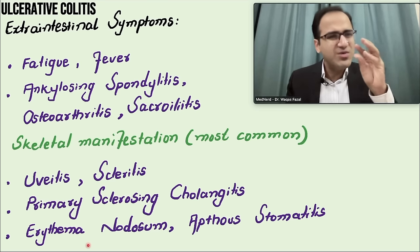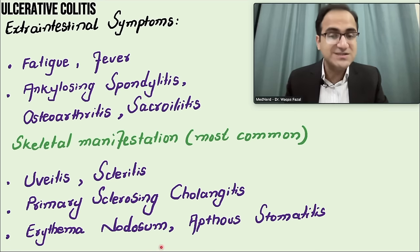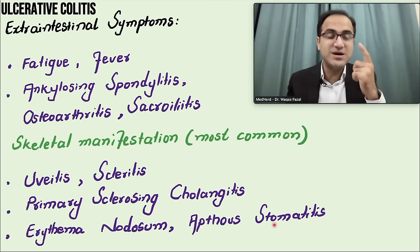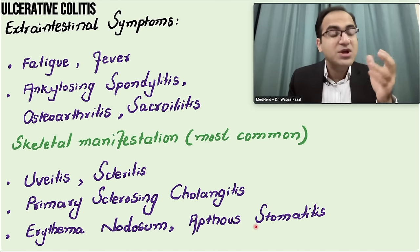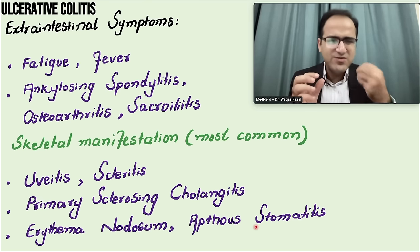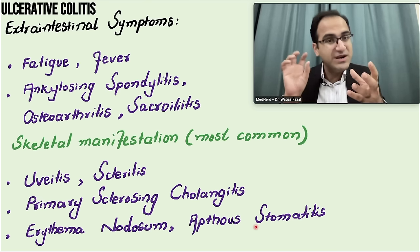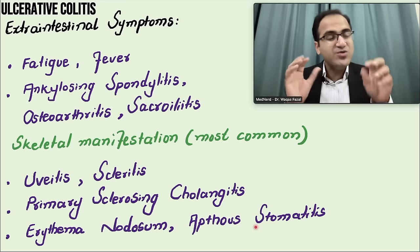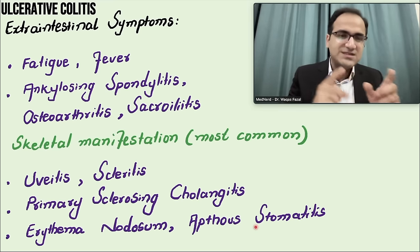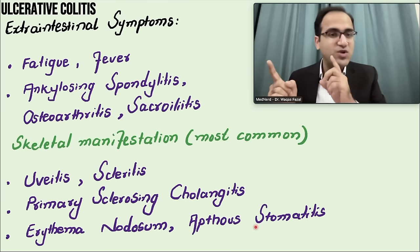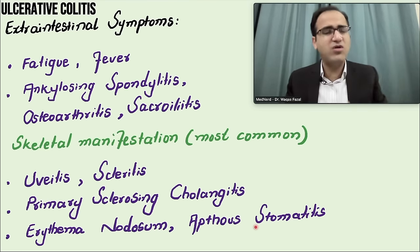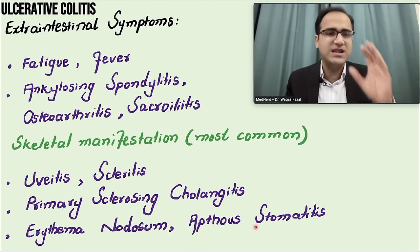Other manifestations include erythema nodosum — painful lesions on the anterior shins — and aphthous stomatitis, which are painful aphthous ulcers in the mouth. Remember, aphthous ulcers are also seen in Crohn's disease. In exams, if they give you aphthous ulcers with bloody diarrhea, it is very likely they want you to choose Crohn's disease, as it involves the whole GIT from mouth to anus.